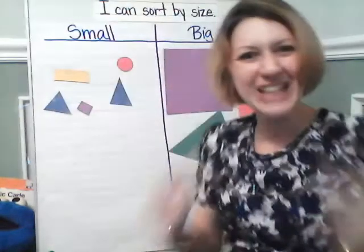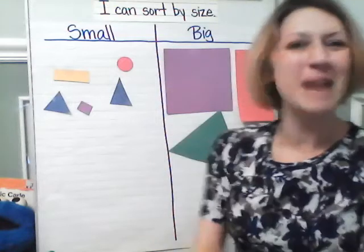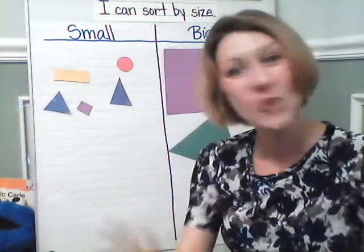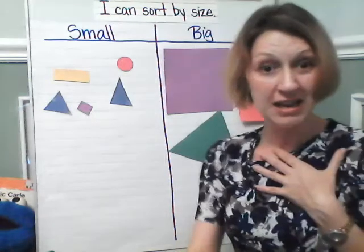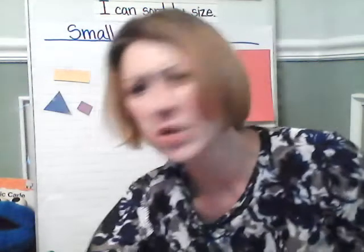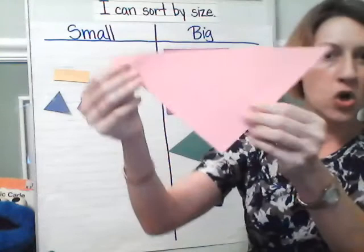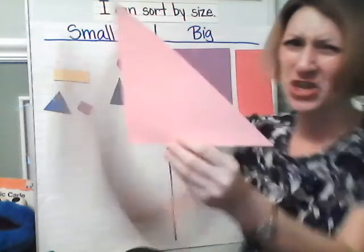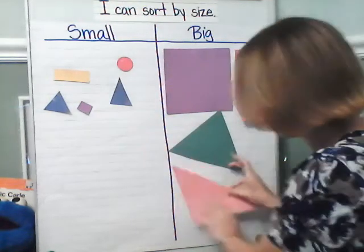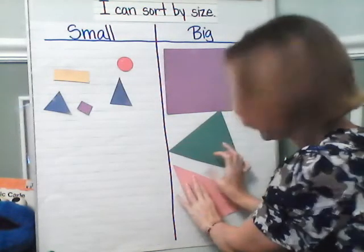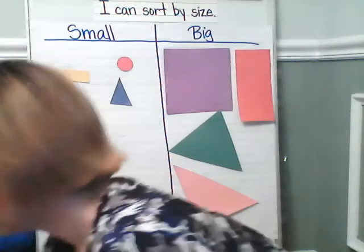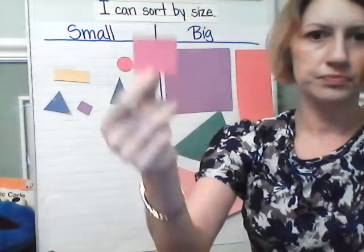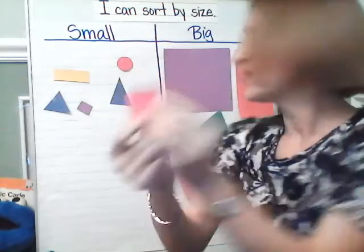You're doing a great job helping me sort the shapes by size. Thank you so much. We have some more. Can you help me? What about this triangle? Big or small? What are you thinking? I think it's big, too, I agree with you. Let's go ahead and put that on the big side. What about this square? Big or small? Small? Yeah, I agree with you. Definitely. Let's add it to the small side.